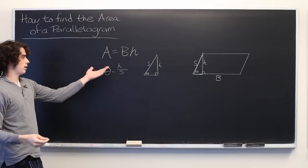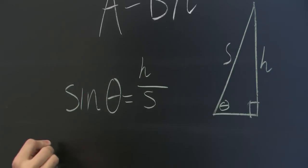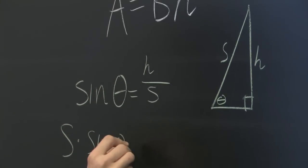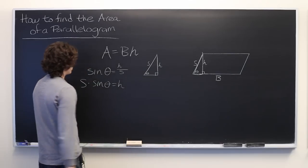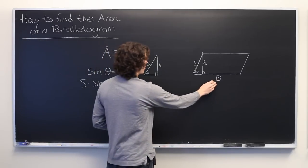Okay. Well, from here we can easily isolate H by multiplying both sides by S. So we get S times sine theta. So we can simply multiply this quantity times the base. We've got our area.